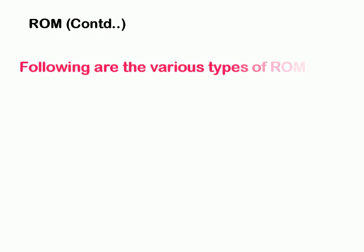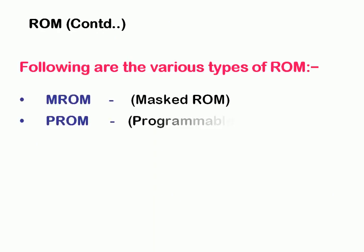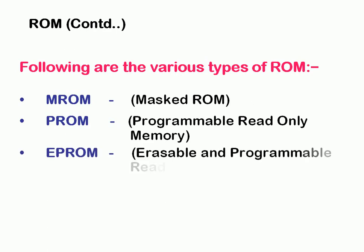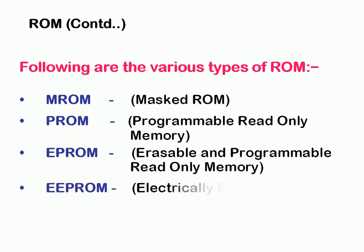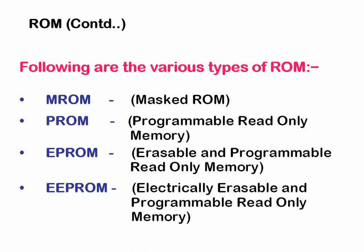Following are the various types of ROM. There are four types: MROM — Masked Read Only Memory; PROM — Programmable Read Only Memory; EPROM — Erasable and Programmable Read Only Memory; and EEPROM — Electrically Erasable and Programmable Read Only Memory. I will briefly discuss each of these.